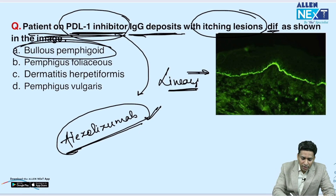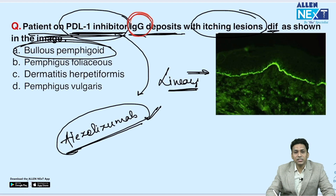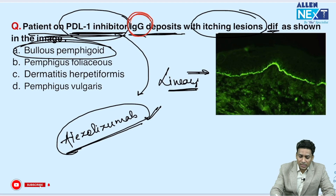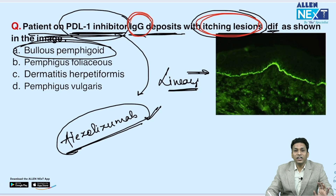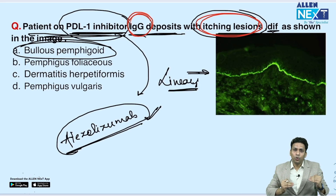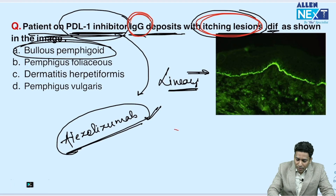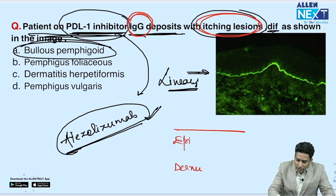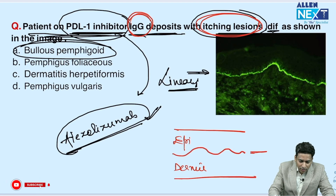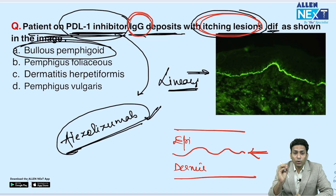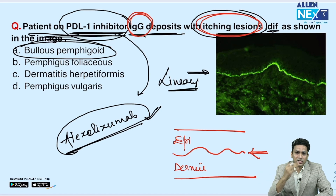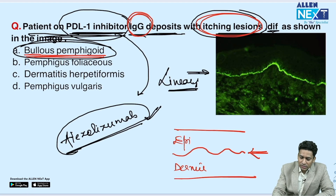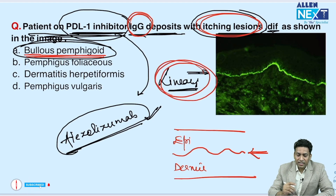All other features are also suggestive of bullous pemphigoid. In bullous pemphigoid, IgG antibodies are seen and itchy tense blisters are present. These IgG antibodies target BP180 and BP230, depositing in the basement membrane zone — giving a linear pattern on DIF. The answer is bullous pemphigoid, supported by the linear DIF pattern, itchy blisters, and IgG deposits.